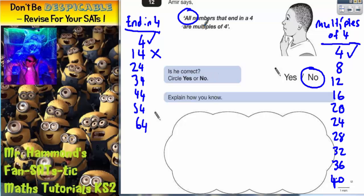He isn't correct because not all of the numbers that end in a 4 are multiples of 4—because 14 is not a multiple of 4.